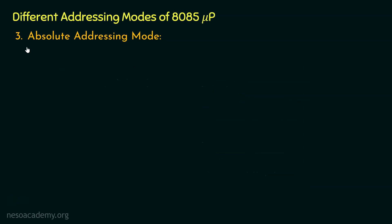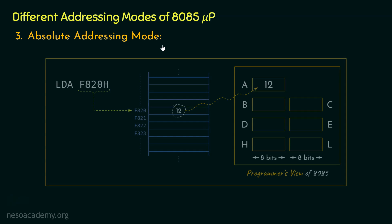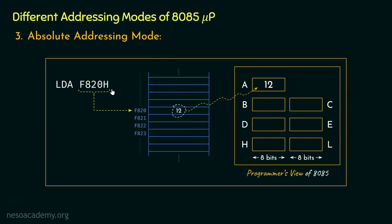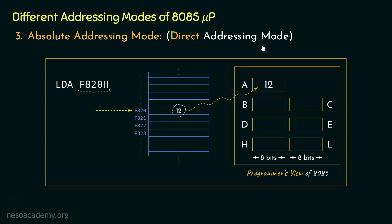Coming up next, the absolute addressing mode. The execution of the instruction LDA F820 was the example of this type. Notice in this instruction we are not specifying the register, neither are we giving the data immediately — rather we are specifying the absolute address, or the actual address where inside the memory the data is residing. With the help of execution of this instruction, the data is then loaded within the accumulator register. Since we are sending the address of the data directly through the instruction, this addressing mode is also known as direct addressing mode.